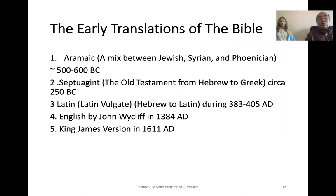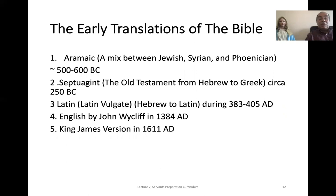The early translations of the Bible: first was the Aramaic, which is the mixed language between Hebrew, Syrian, and Phoenician, around 500 years before Christ. Then the Septuagint, the Greek translation, around 250 before Christ. Then the Latin translation known as the Latin Vulgate, around 383 to 405 AD. Then the English translation by John Wycliffe in 1384 AD. Then the famous translation by King James in 1611 AD.